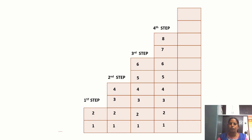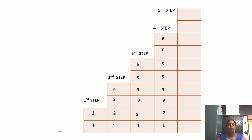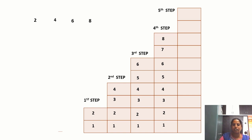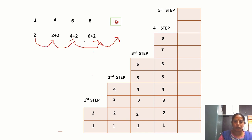You can identify that by increasing by two bricks, the steps are built. So the fifth step uses 10 bricks, and the sixth step uses 12 bricks. The number pattern is: 2, 4, 6, 8, 10 and so on. The pattern observed here is increasing by two. This is following a certain rule.